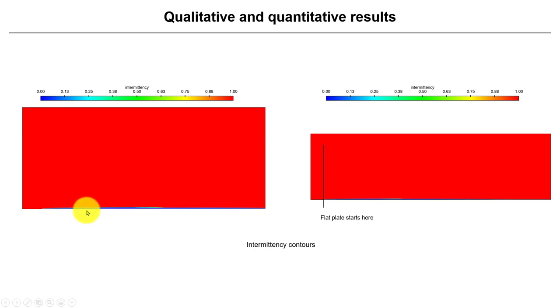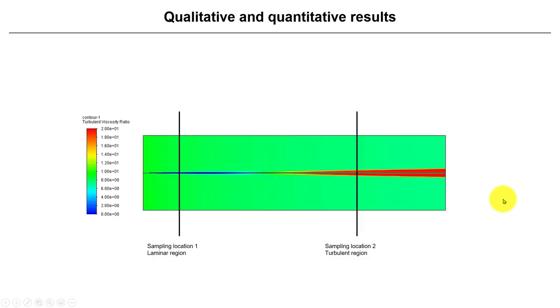Basically, zero means we have laminar flow, and one means you have fully turbulent flow. See that here at the beginning of the flat plate, we have a rather thick region with laminar flow. Then it becomes thinner, the indication that we have the turbulent boundary layer there.